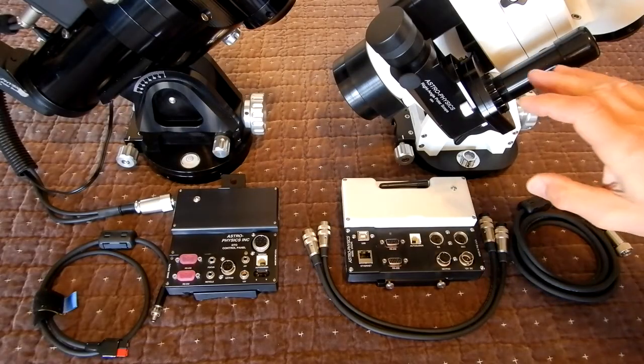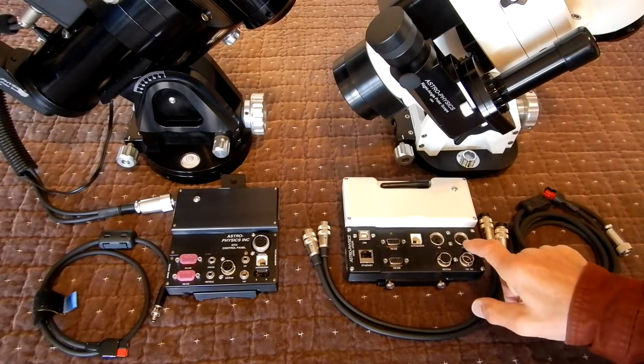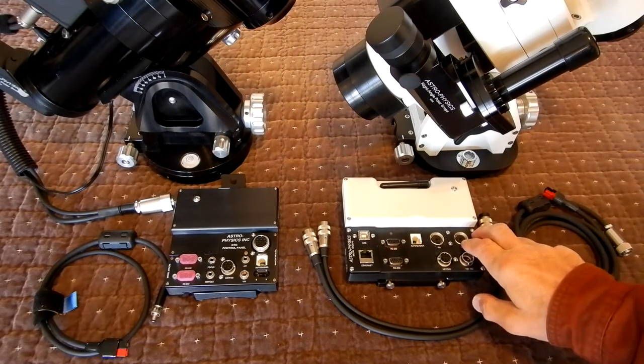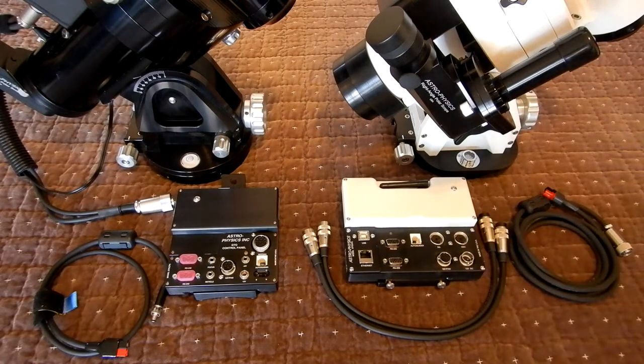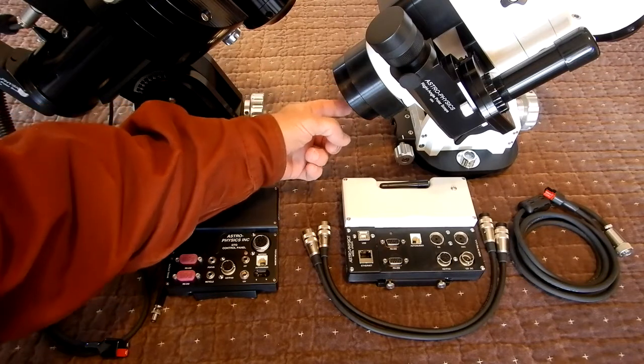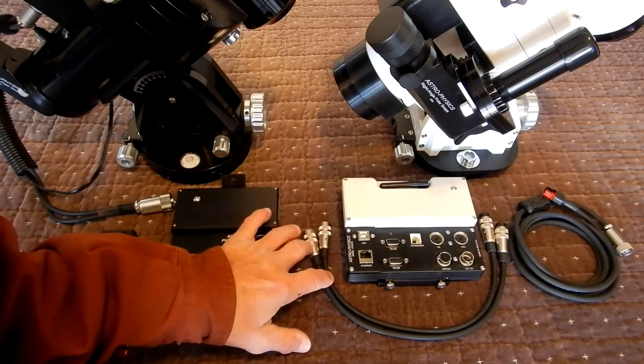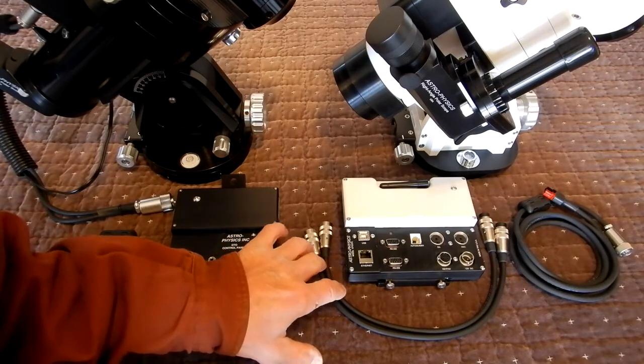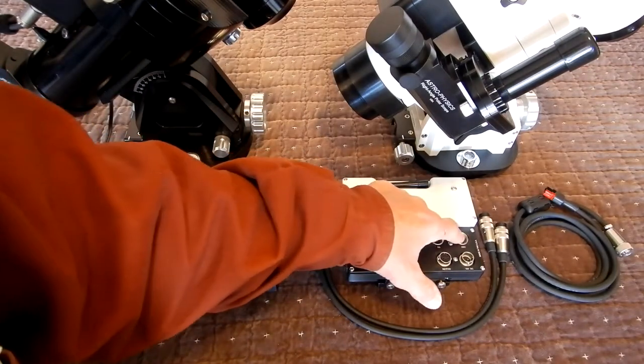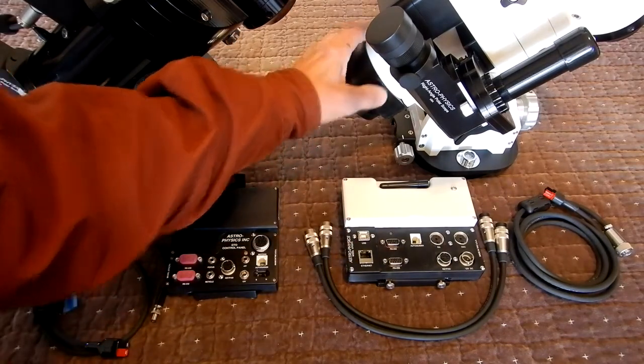Now on the Mach 2 it is done a little differently. We have a right ascension and a deck connector on the CP5. And as I showed you earlier, on the back end of the RA axis you have the RA and then the deck input there. Requiring two cables - each one, they are the same cable, but as long as you plug it into the proper port on the CP5, you will get the input on the proper axis on the Mach 2.